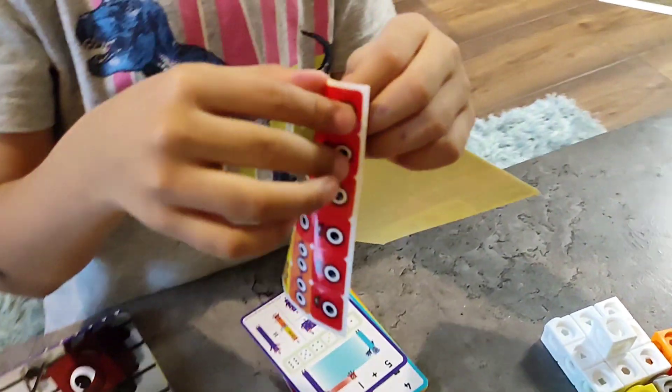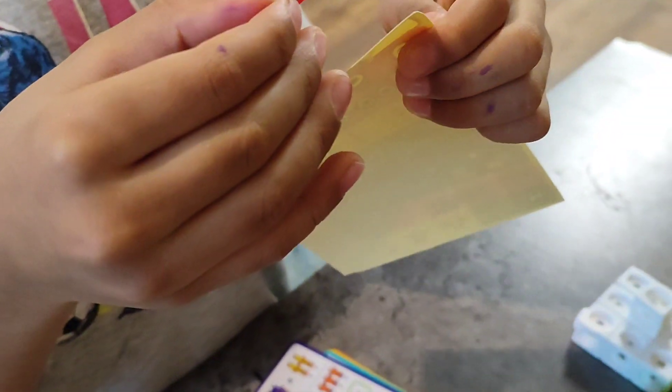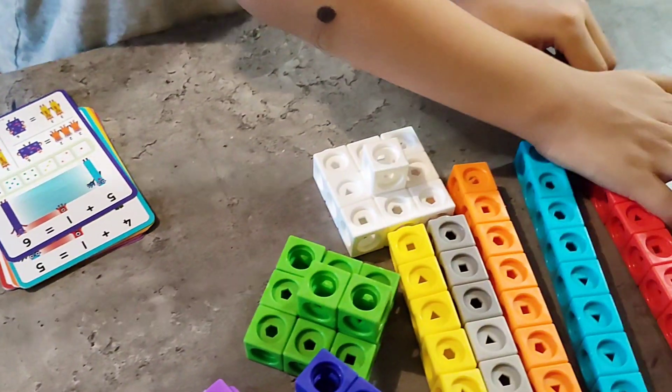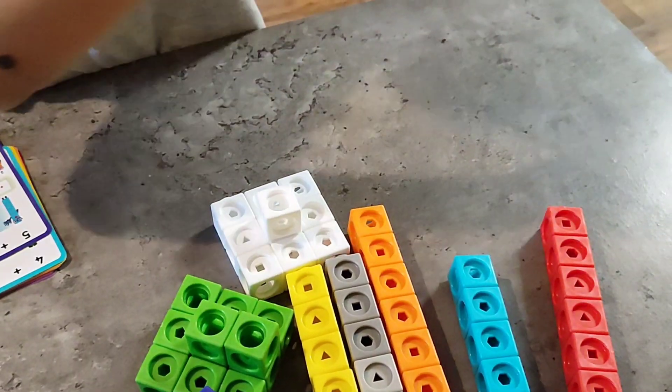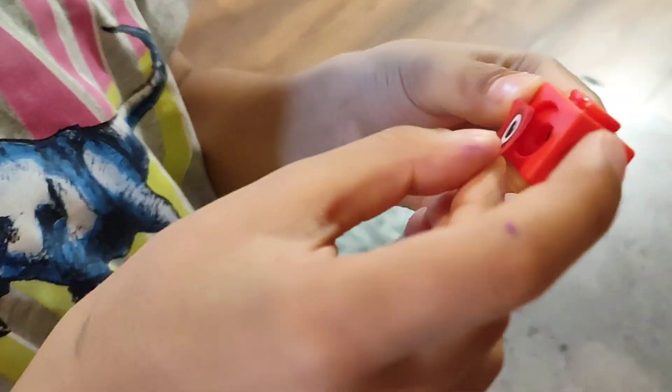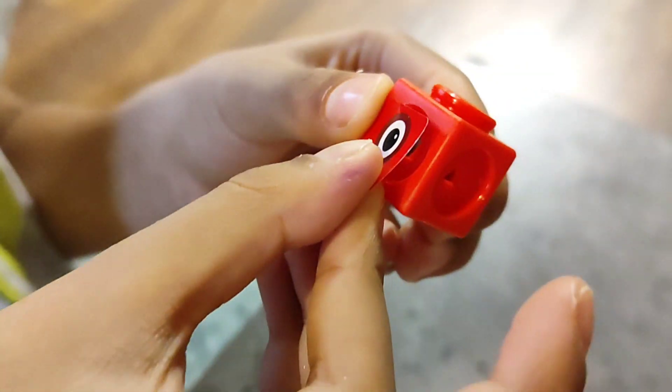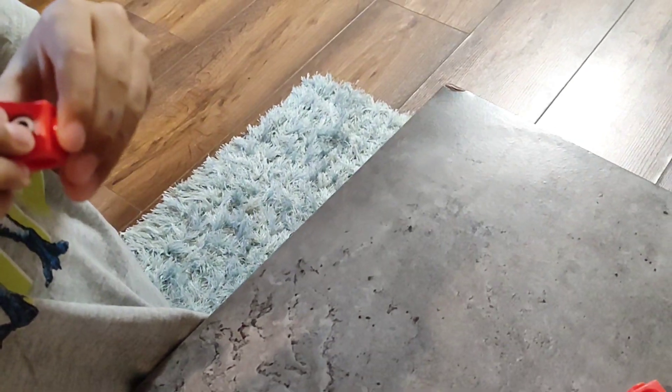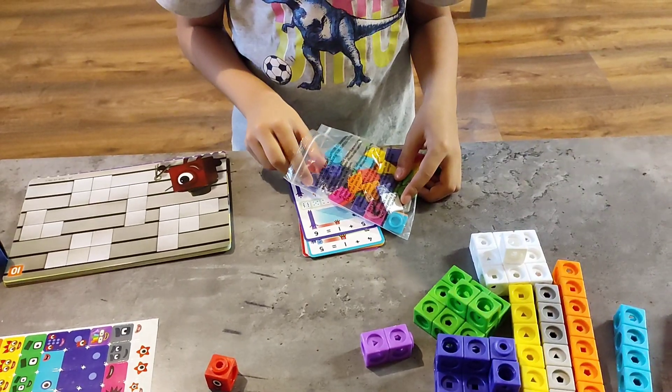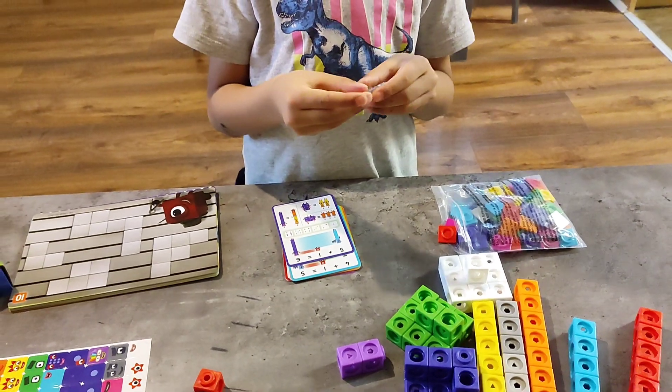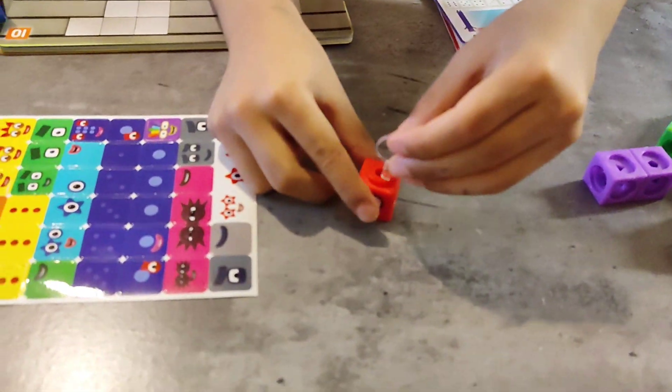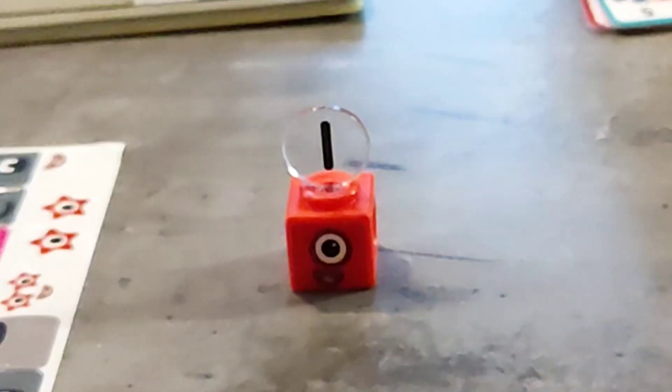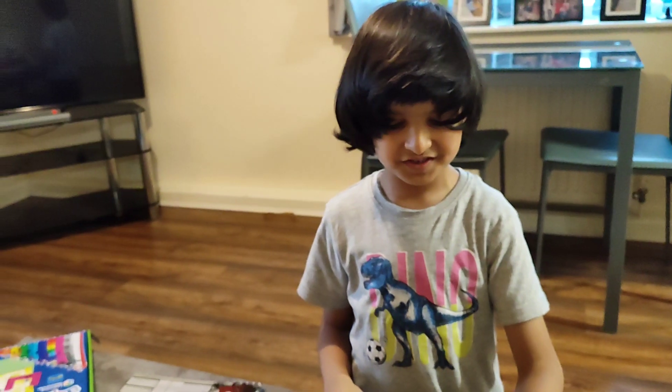Now what you have to do is take a sticker. Let's go. This is number block 1. Now what you have to do is make 2.